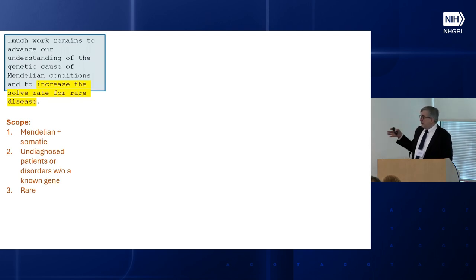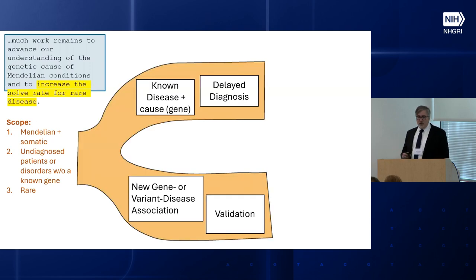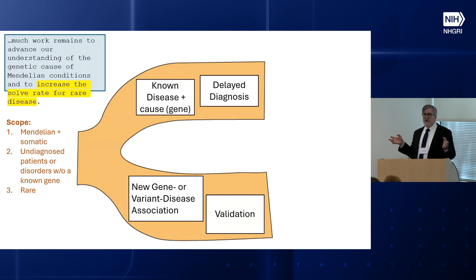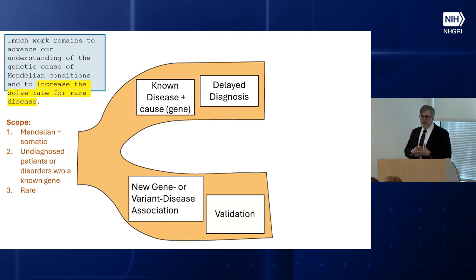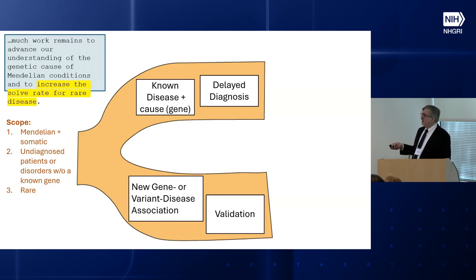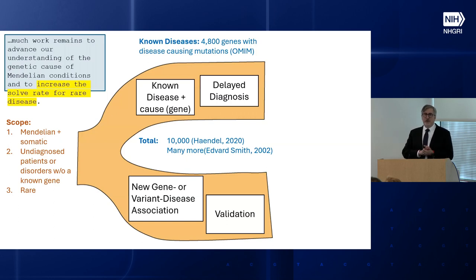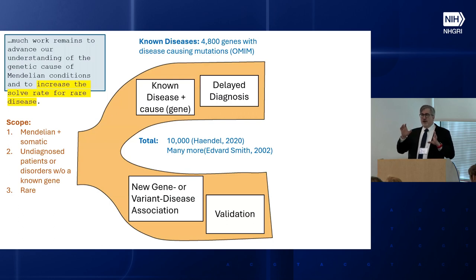We're talking about anything that's Mendelian plus somatic — undiagnosed patients or disorders that don't have a known gene yet, and most of these are going to be rare. This group of starting materials splits into two categories: known disease gene associations, where we're really talking about a delayed diagnosis — something you should be able to diagnose given existing technology — and new gene or variant disease associations, where we've got something in hand but need extra steps to validate it.